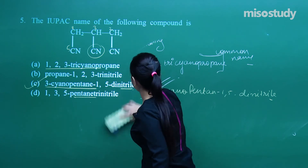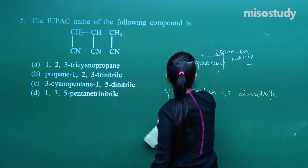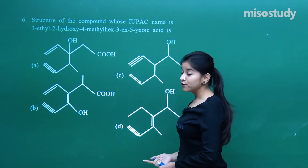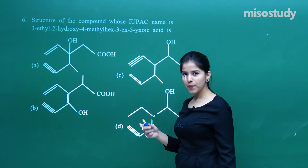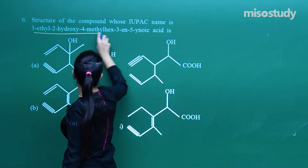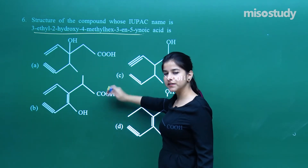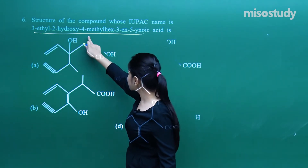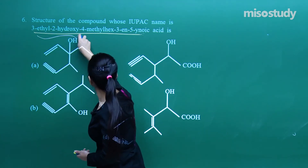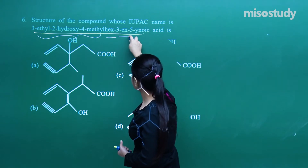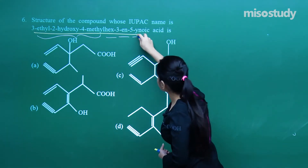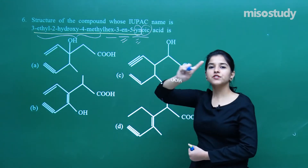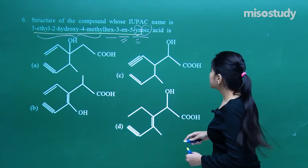Let us just move on to the next one — structure of the compound whose IUPAC name has been given. I need to find out the structure. I've got 3-ethyl, 3-ethyl, 2-hydroxy, 4-methyl — these three are the substituents. Along with 'hex' as the word root. 3-ene means there is a double bond; 5-yne means there is a triple bond. Oic acid means on to the first position I have got carboxylic acid.